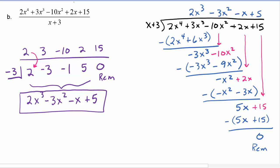So this would actually factor out to be x plus 3 times 2x cubed minus 3x squared minus x plus 5, where x plus 3 is the divisor.